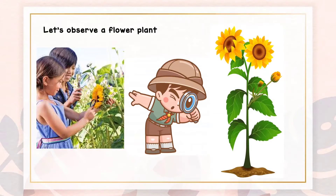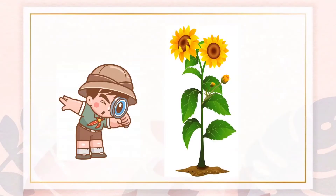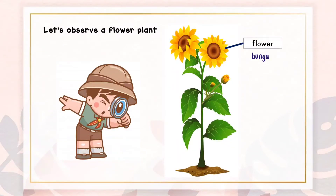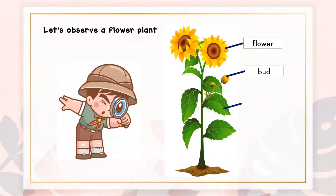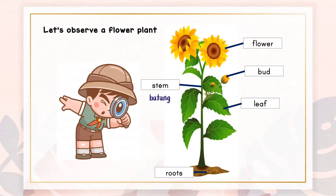Let's observe a flower plant. Look at this sunflower plant — the flower is yellow and it has green leaves. Let's label it. This is the flower. This is the bud. This is the leaf. This is the stem. And the roots.